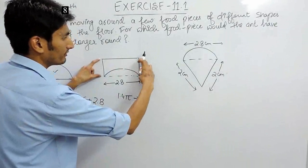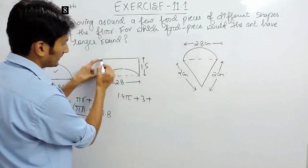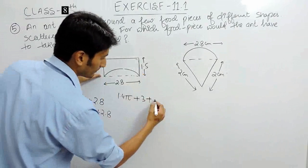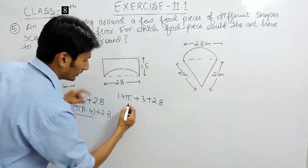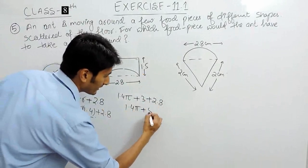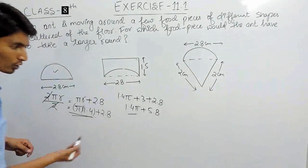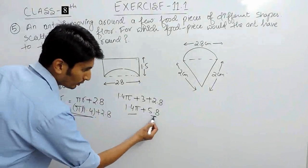this is 1.5, this is 1.5, this is 3 plus this length is nothing but 2.8. So here the perimeter is 1.5 plus this is 5.8, so clearly this value and this value is constant but in this case this is more,